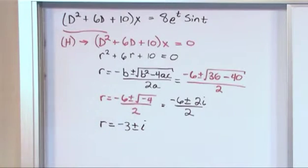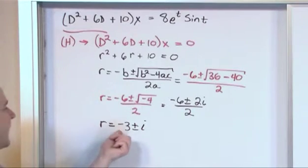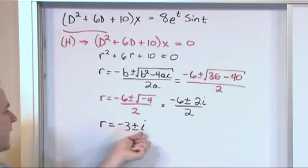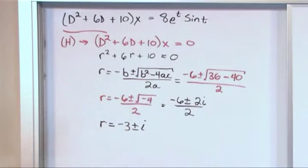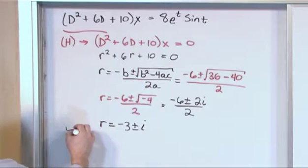So we have a conjugate pair like we always do when we have these complex answers. Negative 3 plus i, negative 3 minus i. And it all comes from the way things are constructed here in the quadratic.